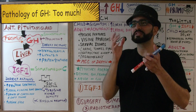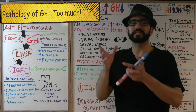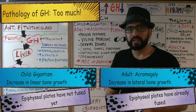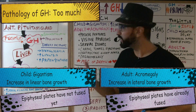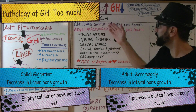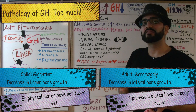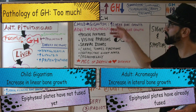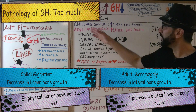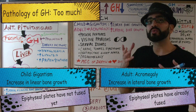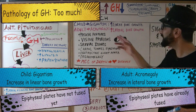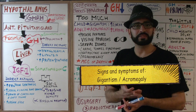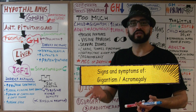Now let's cover the pathology of excess growth hormone. The condition differs depending on age. In a child, where the epiphyseal plates have not yet fused, excess growth hormone causes increased linear bone growth — this is called gigantism. In an adult, where the epiphyseal plates have already fused, excess growth hormone causes increased lateral bone growth — this is called acromegaly.